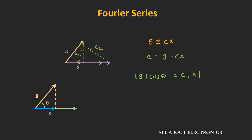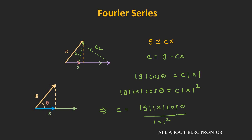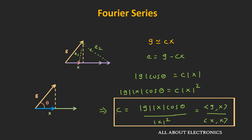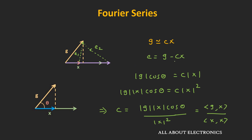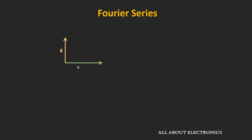The magnitude of the error would be minimum when we take the projection of g on the x vector. Geometrically, the magnitude of the component of g on x will be equal to g·cosθ, which equals cx. If we multiply both sides by x, then gx·cosθ = cx². From this, c = gx·cosθ / x². Here, gx·cosθ is the dot product of vector g and x, while x² represents the dot product of x with itself. This expression shows that if we select the value of c using this formula, the error in the representation of g will be minimum. If θ is equal to 90 degrees, then cos 90 = 0, so the dot product of g and x equals 0, and we can say that vectors g and x are orthogonal. For orthogonal vectors, the dot product of the two vectors will be equal to 0.